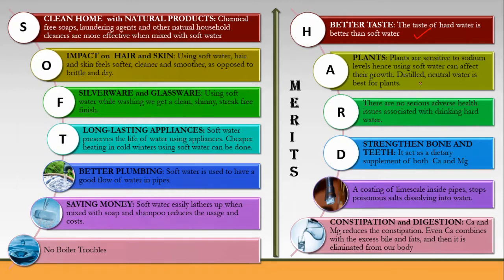Plants are highly sensitive to sodium levels. Sometimes, when we treat water using processes like zeolite in order to soften it, the sodium level in the water rises. Hard water is okay in this regard because certain calcium and magnesium ions are present in it. Soft water, however, can affect plant growth because it lacks those ions.